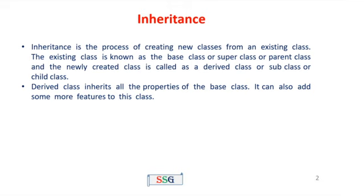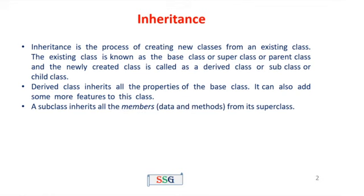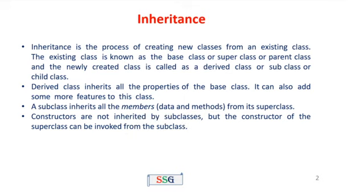The derived class inherits all the properties of the base class. It can also add some more features to this class. A subclass inherits all the members — that is both data and methods — from its super class. Constructors are not inherited with the subclass, but the constructors of the super classes can be invoked from the subclass.